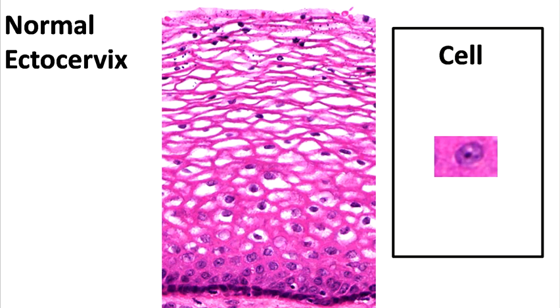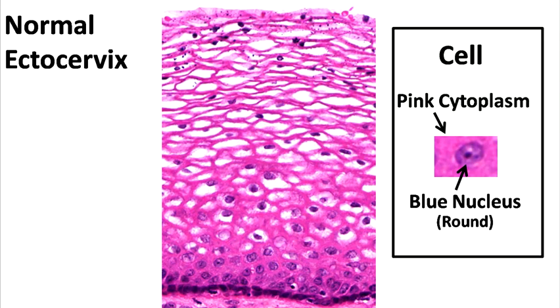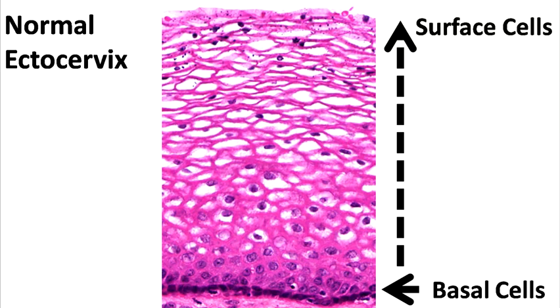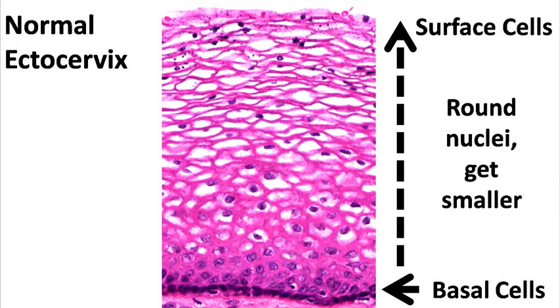The cells of the epithelium have pink cytoplasm and blue nuclei, and the healthy cells have round nuclei. In normal healthy epithelium, the cells will move off the basement membrane.